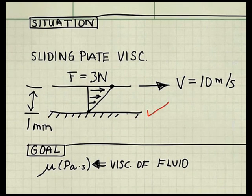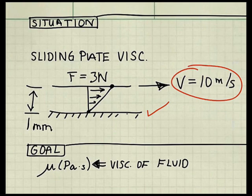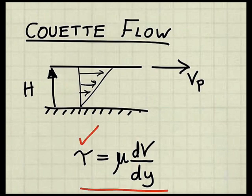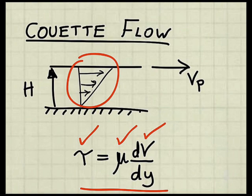When you see a stationary plate and a moving plate, think Couette Flow. Let me show you how this works. Here's the shear stress equation: shear stress equals viscosity times velocity gradient. Since the velocity gradient is a straight line, we can replace the derivative with a change in velocity over a change in distance. So this becomes viscosity, change in velocity over a change in distance.